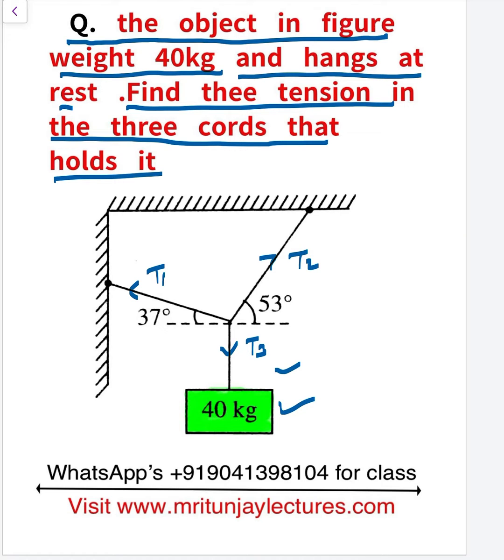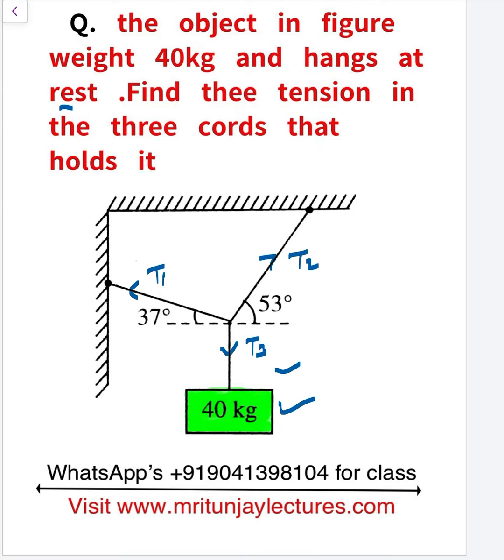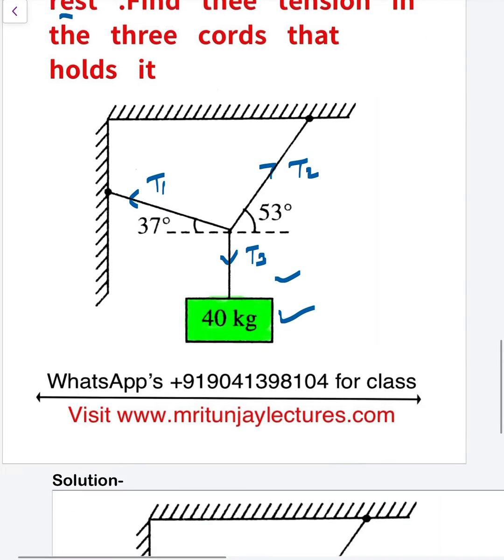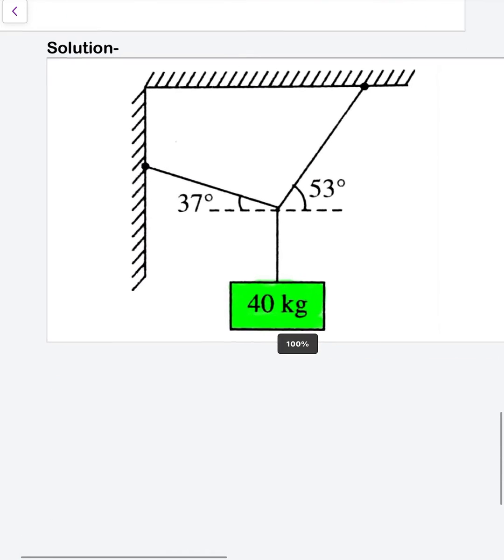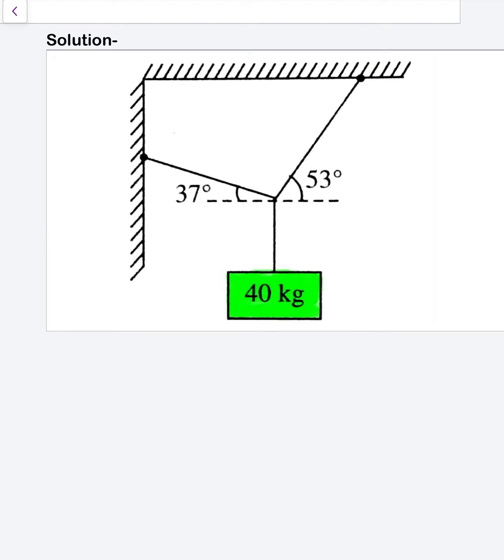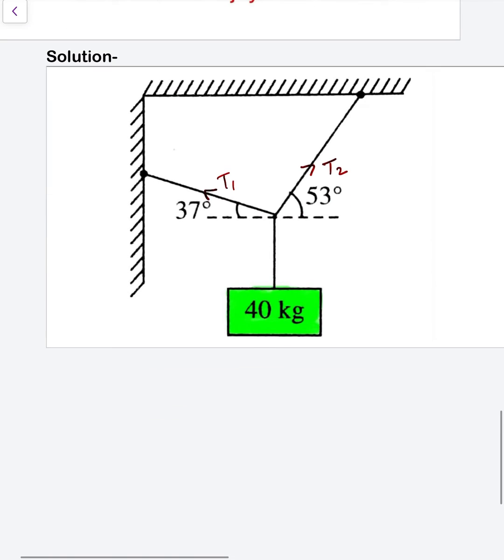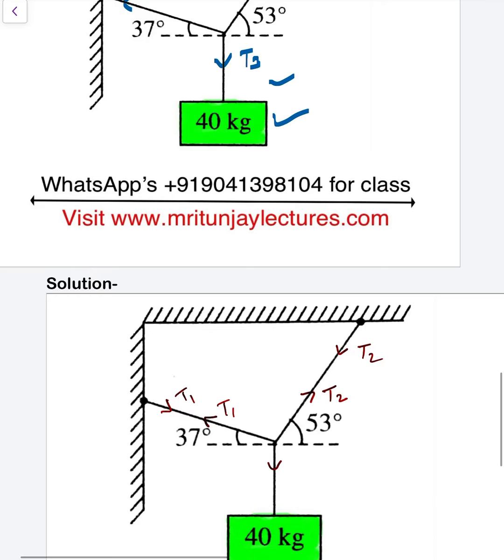How can we do it? First of all, make a free body diagram. In this string, suppose that tension is T2, in this string tension T1. So T2 here, T1 here, and T3.